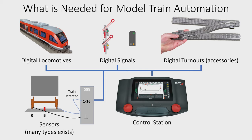There are many different techniques for this. In this series I will mostly look at S88 train detection using contact tracks. When we have the control station connected to the sensors, it will know where the trains are and can control the locomotives according to the signals on your digital layout.